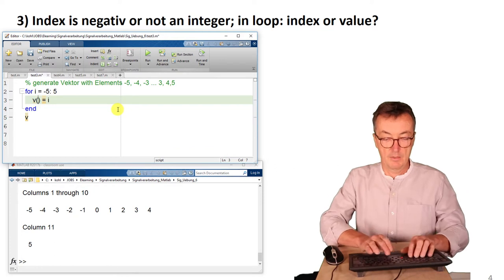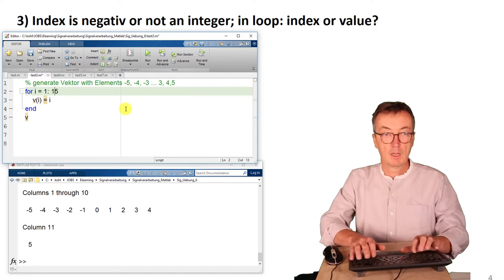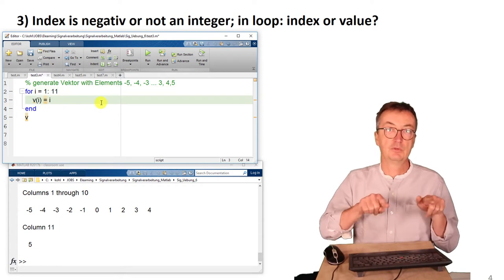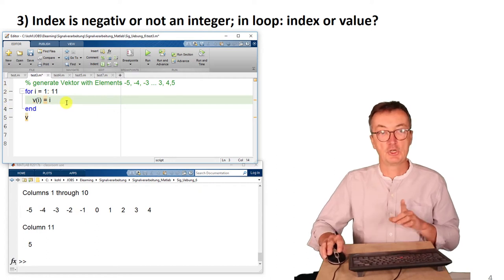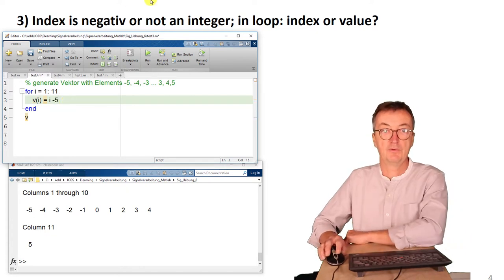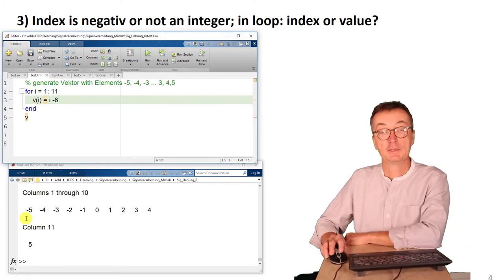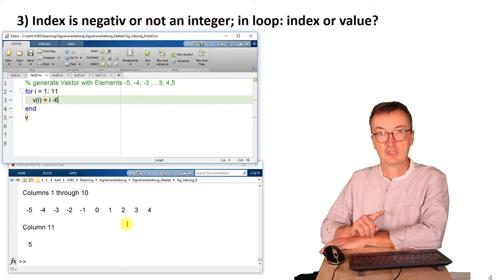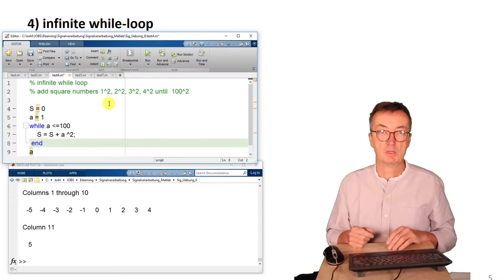I would rather change the thing that the index goes up from 1 to 11 and the index is used to calculate the content. That is, on the right-hand side of line 3, change the content to be i minus 6. That would generate the same vector. The thinking is a bit different whether the content is changed in the loop or the index.